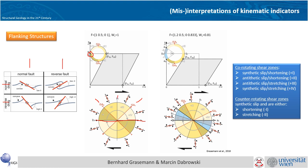Another important line is the gamma dot, which is an orientation where the marker line would experience a maximum rotation rate or no instantaneous length change. This separates sectors where the slip surface would shorten or stretch.